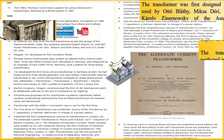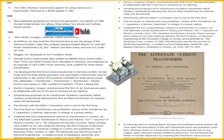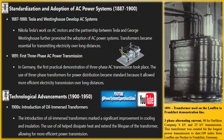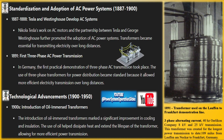In 1879, the Brush Electric Company built the first central station in Cleveland, using constant current DC generators to provide lighting. Thomas Edison demonstrated his first incandescent lighting system using DC later that year, revolutionizing electric illumination but facing limitations in long-distance electricity transmission.